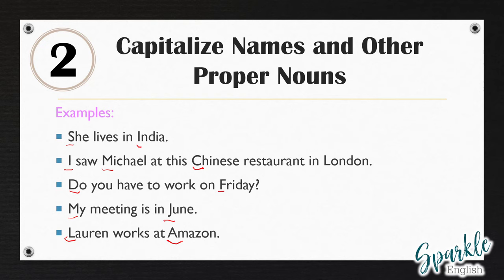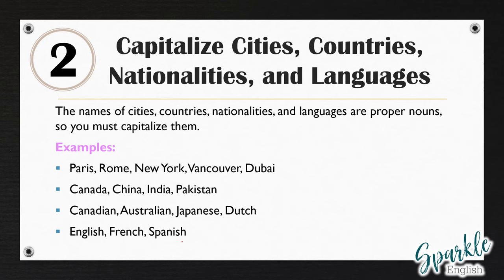You have to capitalize cities, countries, nationalities, and languages because they are all proper nouns. Cities: Paris, Rome, New York, Vancouver, Dubai. Countries: Canada, China, India, Pakistan. Nationalities: Canadian, Australian, Japanese, Dutch. And we have to capitalize languages as well: English, French, Spanish.